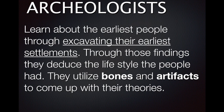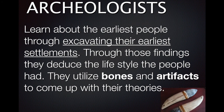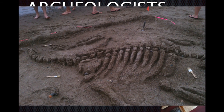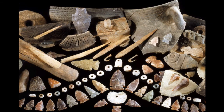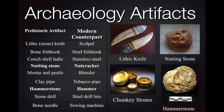Archaeologists are those who learn about the earliest people through excavating their earliest settlements. What they're looking for are bones and artifacts — hard evidence they can use to deduce and make guesses about the people who lived during that time. Here's a list of artifacts that an archaeologist would examine. They figure out when it was made, look at its shape, look at how it may have been damaged, and through studying these different artifacts they try to figure out the lifestyle people lived during that era. Interestingly, a lot of these ancient artifacts from thousands of years ago still exist today, just in an evolved form.